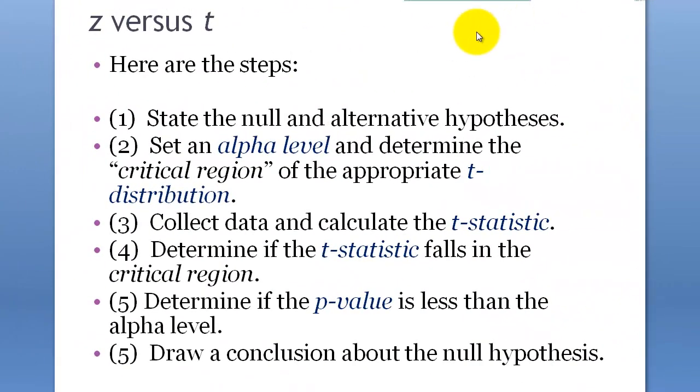Hypothesis testing using a t-statistic is pretty much the same as doing hypothesis testing with z-statistics. You follow the same procedure, but the difference is the calculation of the t-statistic, and also the t-table is different from the z-table, and of course the p-value is going to be different too.